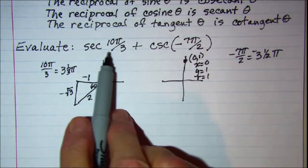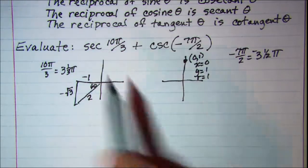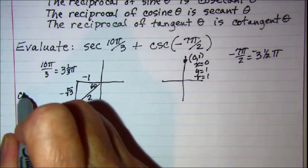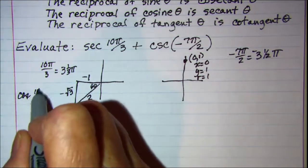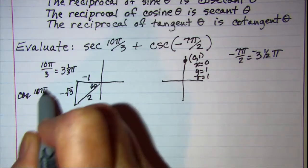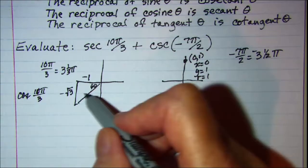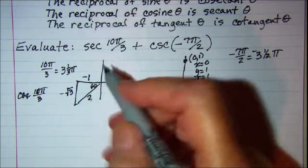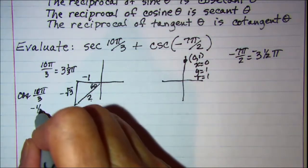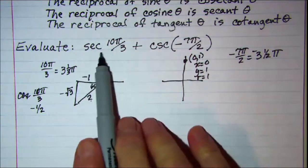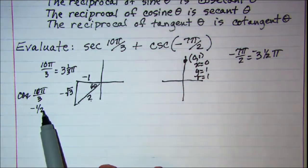So secant is the reciprocal of cosine. So my cosine of this reference angle, 10π over 3, is adjacent over hypotenuse. So that's negative 1/2. So for secant I want to flip this upside down.